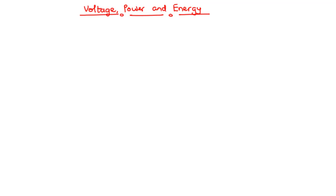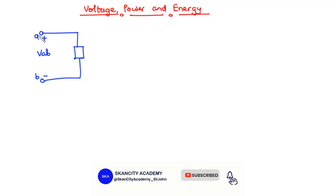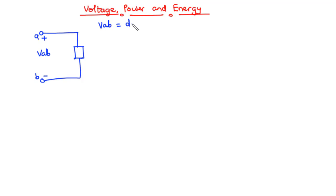To move an electron in a conductor in a particular direction requires some form of work to be done, and this work is done by the external EMF or in this case, the battery. So let's assume that we have a voltage source connected across an element. We have this to be the voltage VAB, which is expressed across this element. The voltage VAB between the two points A and B in this electric circuit is said to be the energy or the work needed to move a unit charge from A to B. We can express this mathematically as VAB equals W divided by Q, and that is measured in volts.